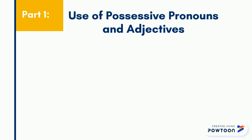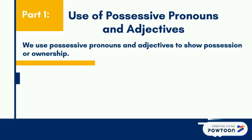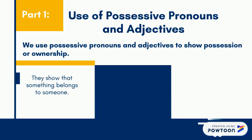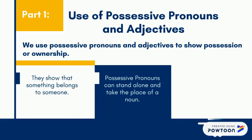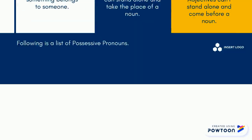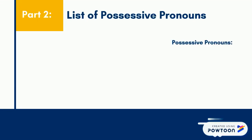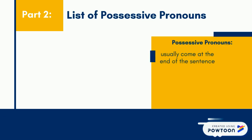We use possessive pronouns and adjectives to show possession or ownership. Possessive pronouns can stand alone and take the place of a noun. However, possessive adjectives can't stand alone and come before a noun. Keep in mind that possessive pronouns usually come at the end of the sentence and can't stand alone.